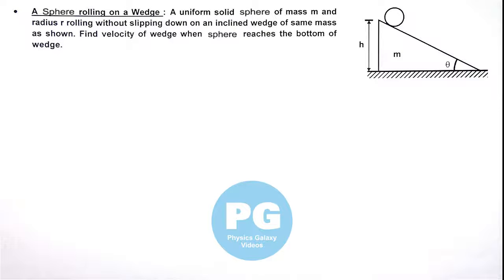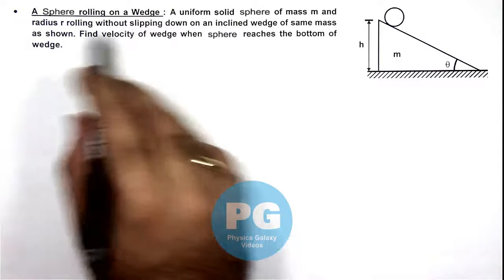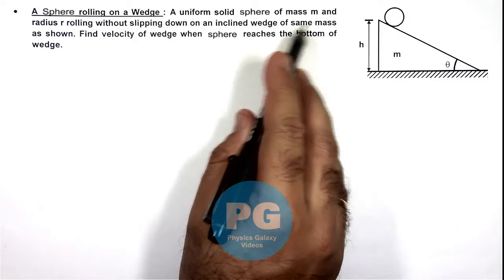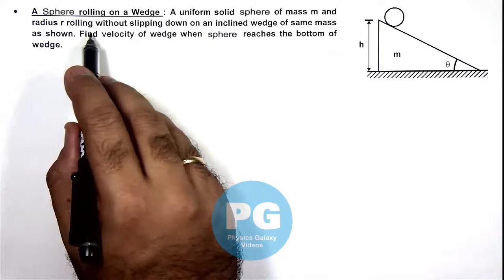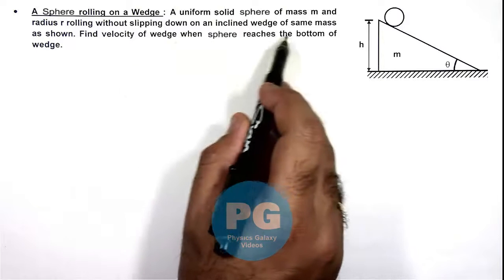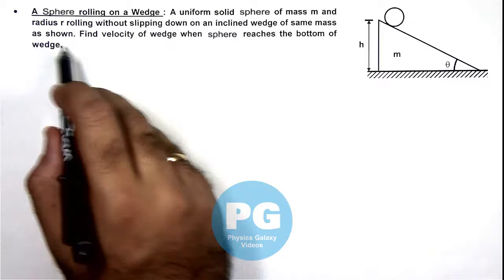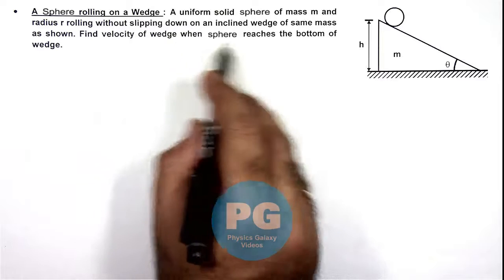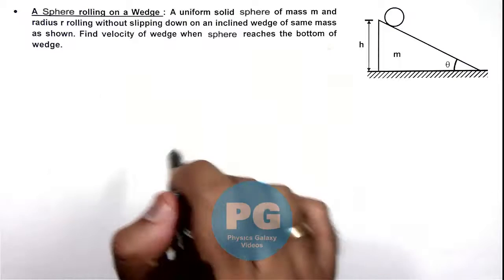In this illustration we'll analyze a sphere rolling on a wedge. We are given that a uniform solid sphere of mass m and radius r rolling without slipping down on an inclined wedge of same mass as shown. Here we are required to find the velocity of wedge when sphere reaches the bottom of this wedge.